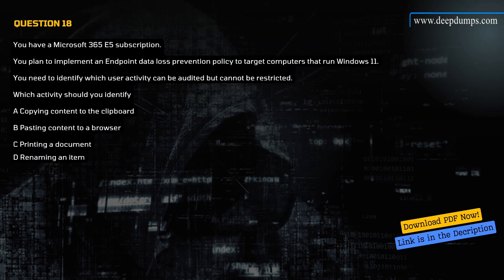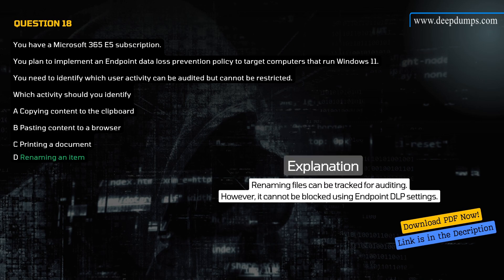Question 18. You have a Microsoft 365 E5 subscription. You plan to implement an Endpoint DLP policy targeting computers that run Windows 11. You need to identify which user activity can be audited but cannot be restricted. Which activity should you identify? A) Copying content to the clipboard, B) Pasting content to a browser, C) Printing a document, D) Renaming an item. Correct answer is D. Explanation: Renaming files can be tracked for auditing; however, it cannot be blocked using Endpoint DLP settings.